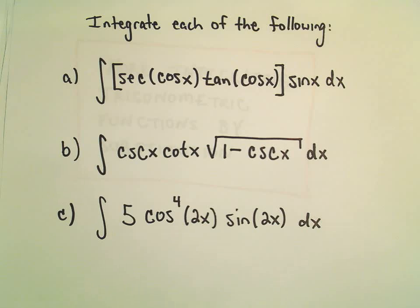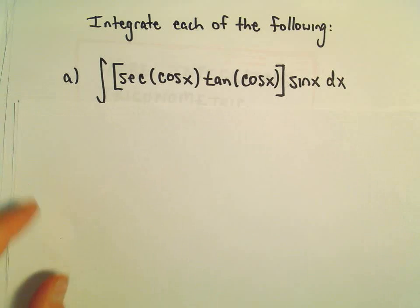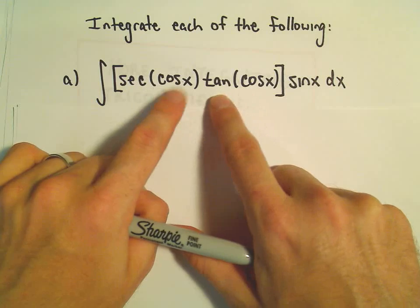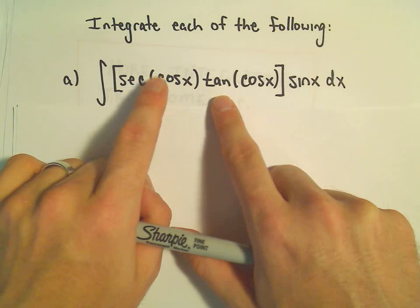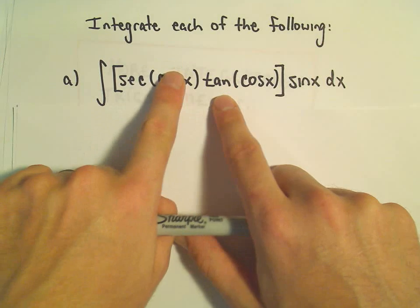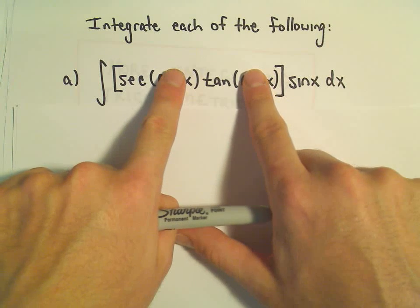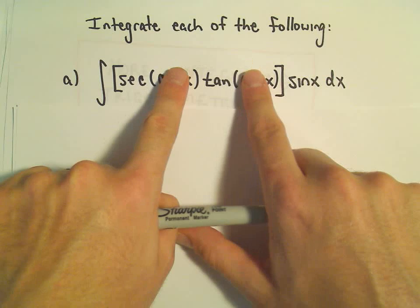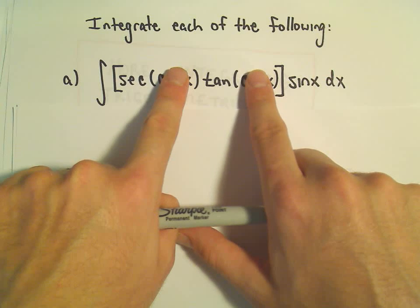The first thing that kind of makes me nervous is I see the secant of cosine tangent of cosine, and that's kind of a strange function. But I know if it was just secant of something and tangent of something, just a single variable, I know the antiderivative of secant x times tangent x, for example.